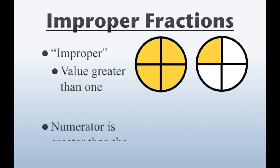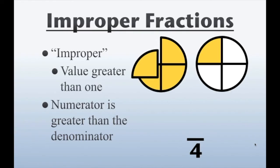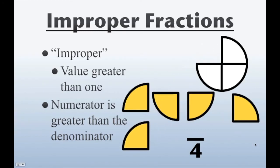Well, how do we know that? Because the numerator is greater than the denominator. The denominator here is 4, because each of our wholes has 4 pieces in it — there's 4 pieces here and 4 pieces here. But how many fourths do I actually have? Each of these is a fourth. How many are shaded? We've got 1, 2, 3, 4, and 5. Therefore, it's 5 fourths. That's our improper fraction — because we have 5 pieces that are fourths, therefore it's 5 fourths.